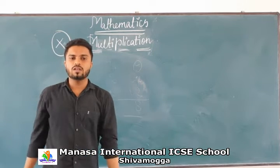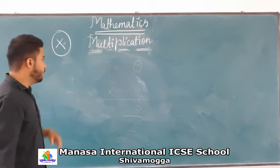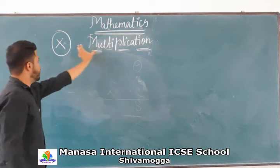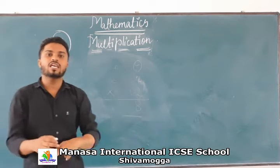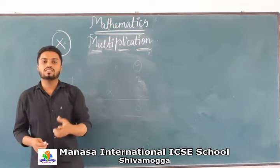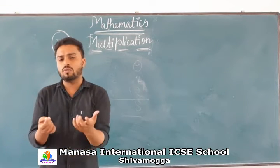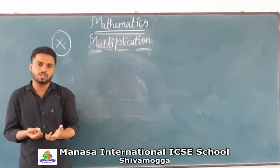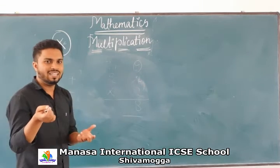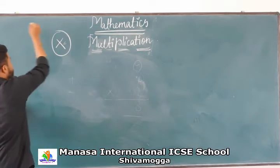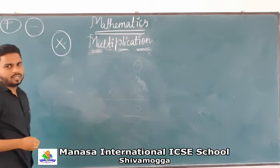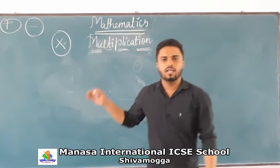Before that, we learn how to represent multiplication. The symbol for this is to represent as multiplication. As I have said in the previous videos or in the previous class, the sign of addition is plus and the sign of subtraction is minus.